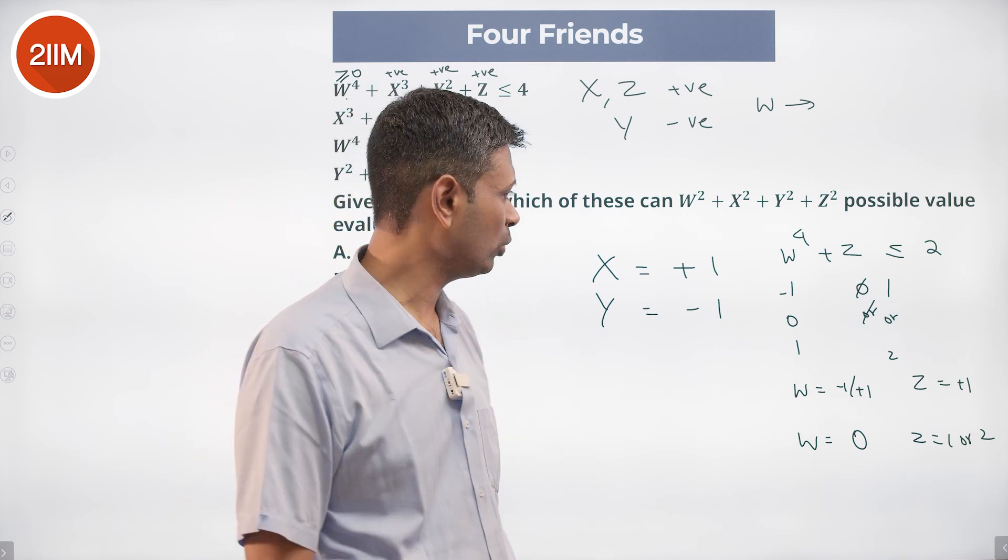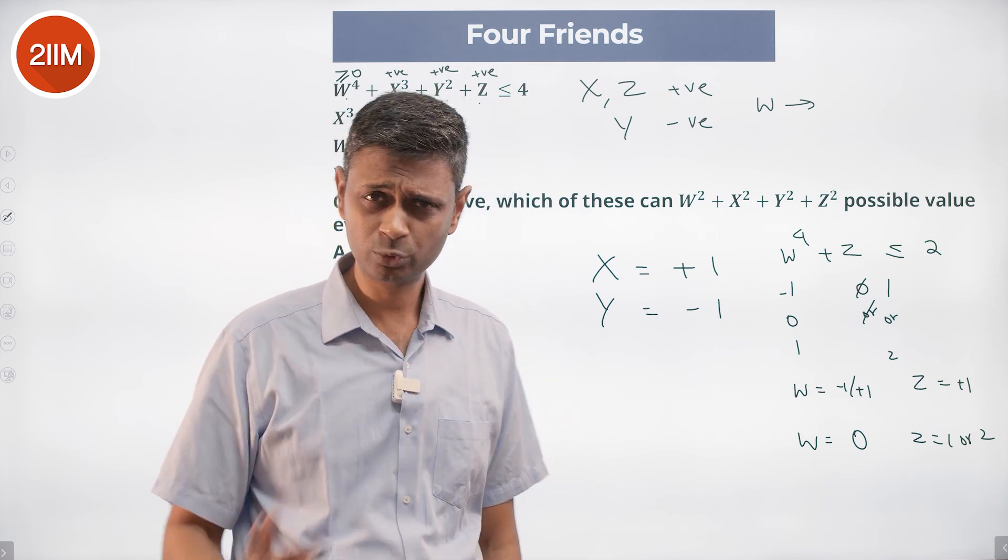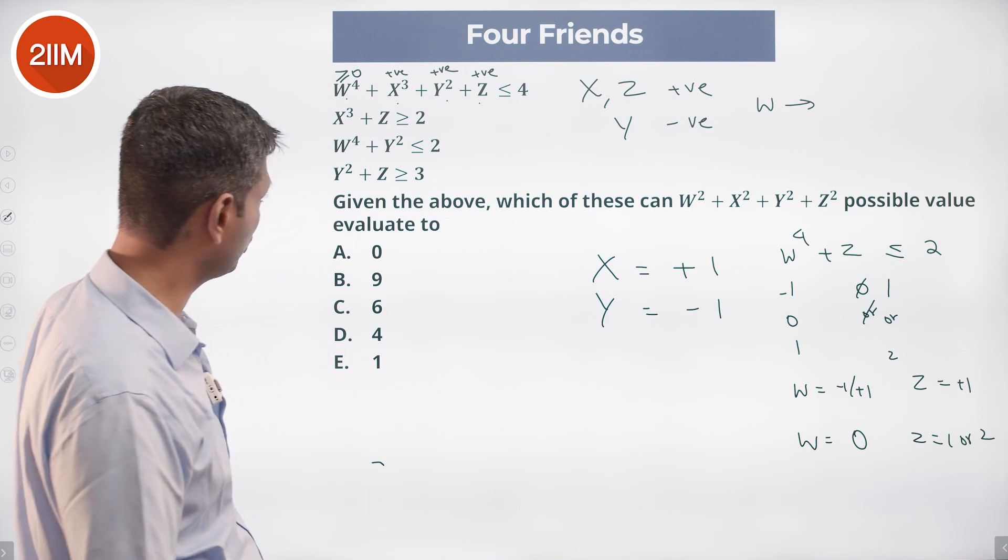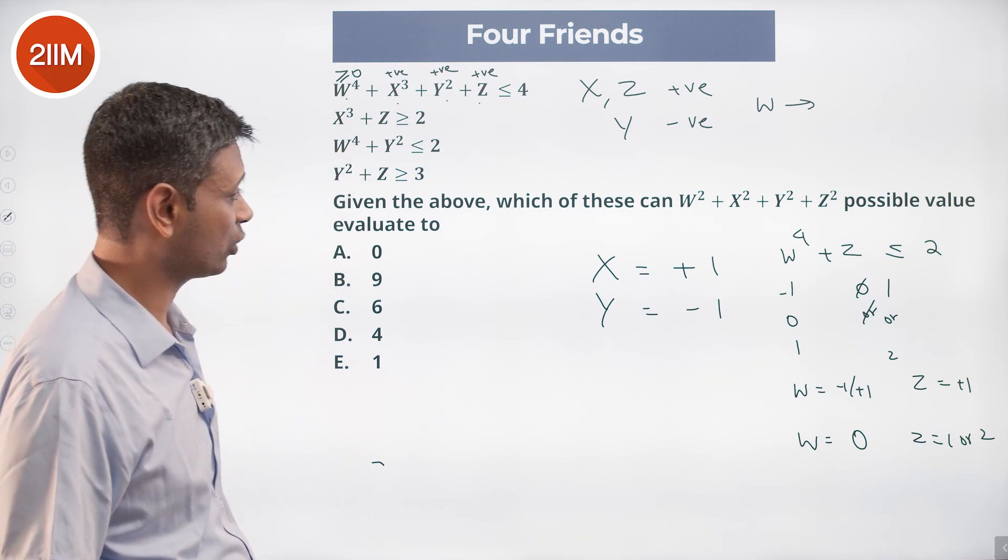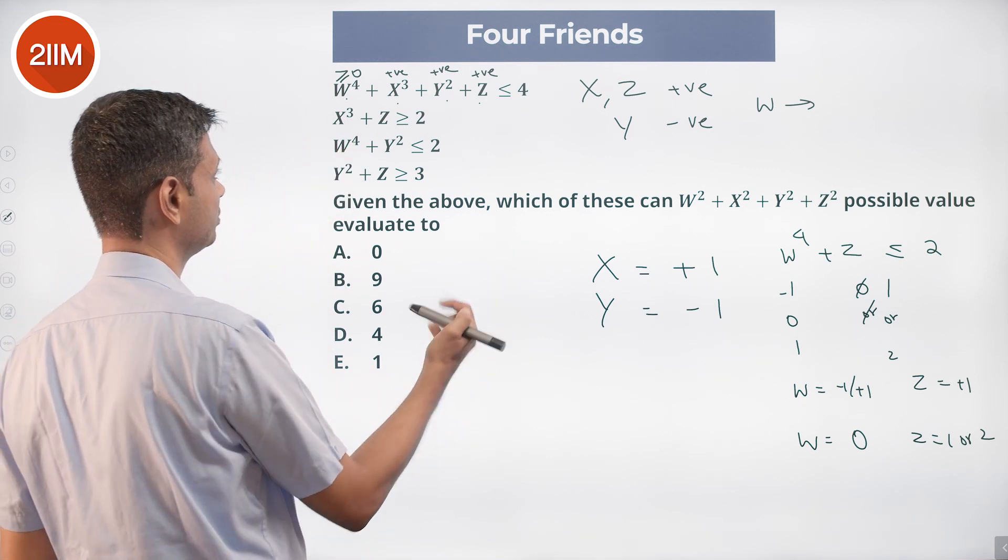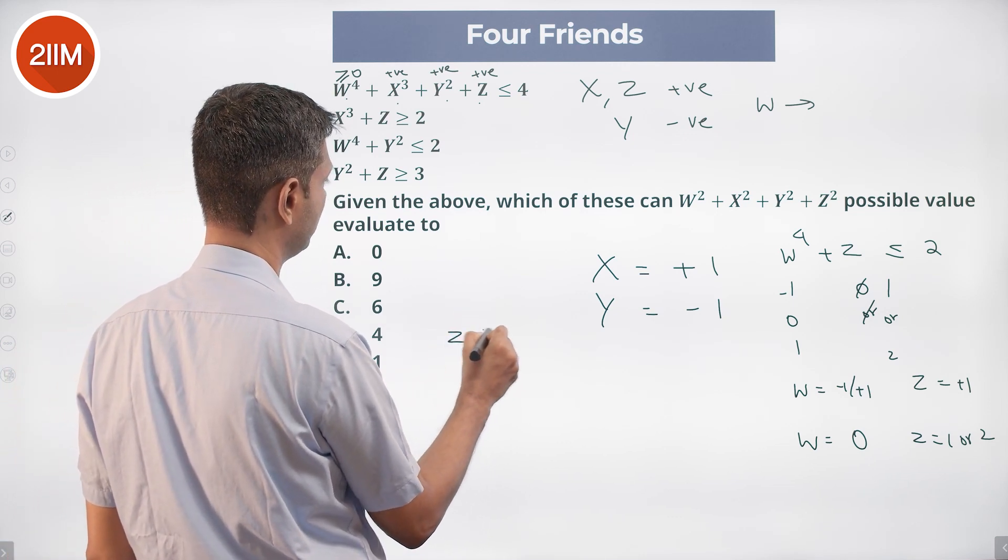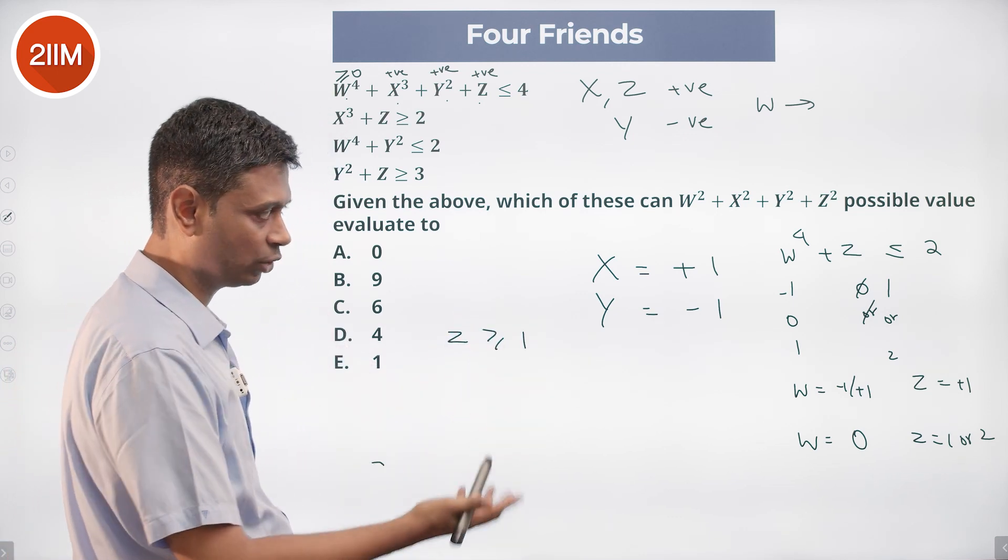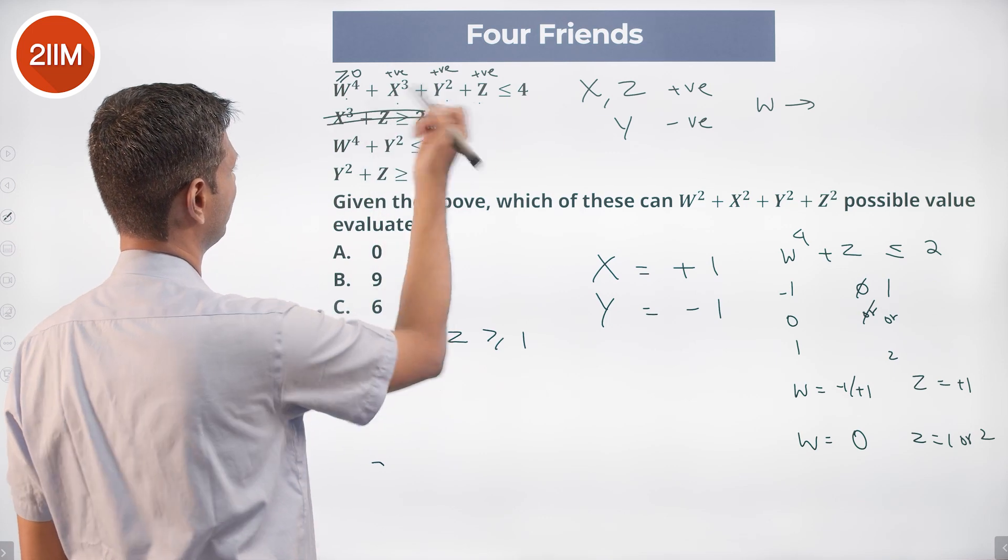Nice. What we know: X is 1, Y is minus 1. Super. Let's use an equation where X and Y are present. X³ + Z ≥ 2. X³ is 1, that means Z ≥ 1. Z is 1 or 2. This is useless for us.